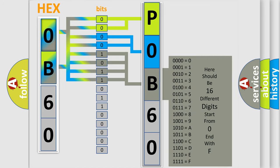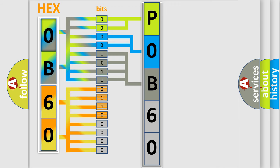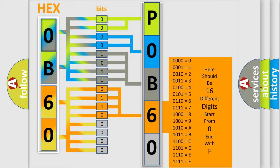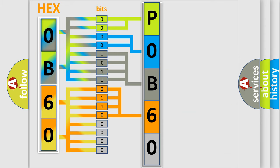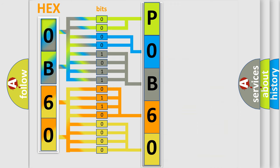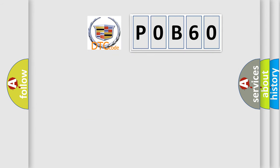The second byte is composed of a combination of eight bits. The first four bits determine the fourth character of the code, and the combination of the last four bits defines the fifth character. A single byte conceals 256 possible combinations. We now know in what way the diagnostic tool translates the received information into a more comprehensible format.